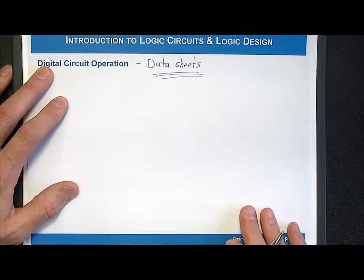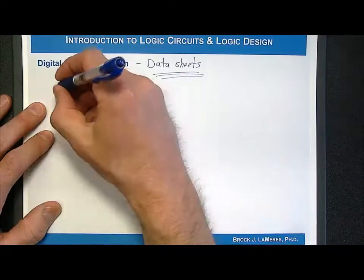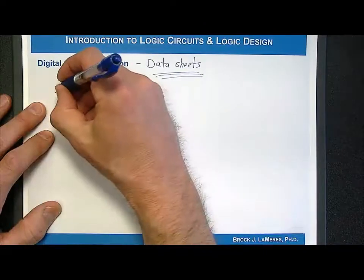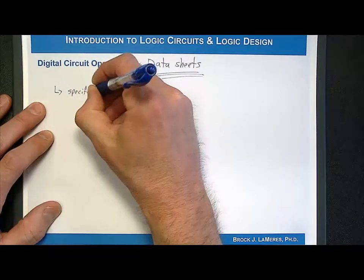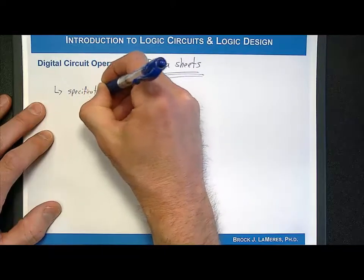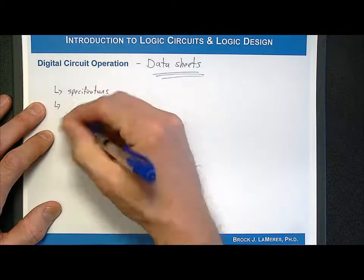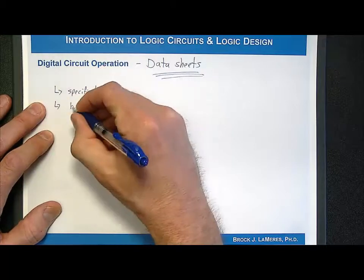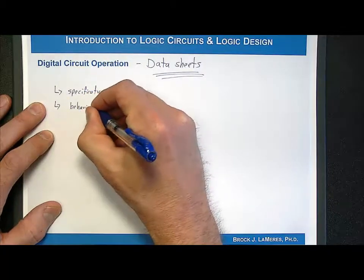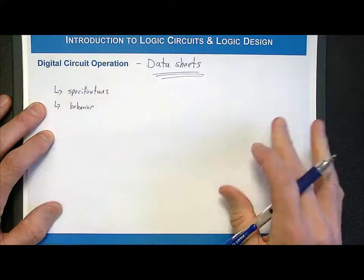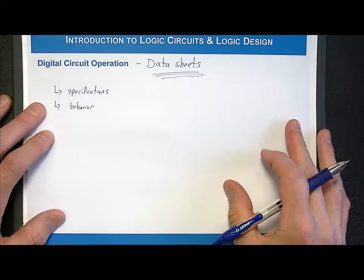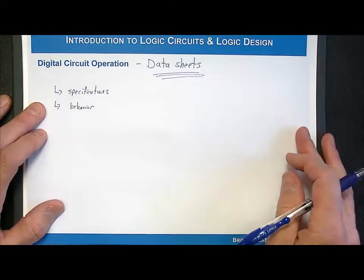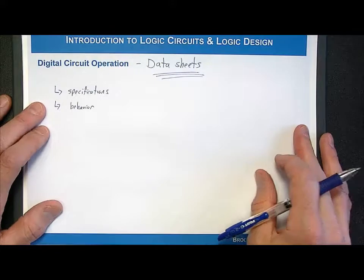Every digital circuit has a datasheet. The datasheet will tell you not only the specifications that you need to look at, but it also tells you things about the functional behavior — so what it actually does. When you think about an inverter, it's very simple, but as digital circuits get larger and more complex, you need a better description of how the thing works.